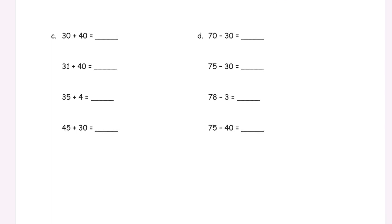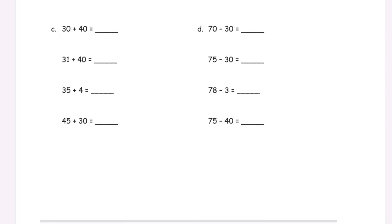And now part C. We're adding tens — 30 and 40, 70. It's three tens plus four tens is seven tens. Seven tens is 70. And 31 and 40. You might see the similarity between these two. This is 30 plus 40, this is 31 plus 40. It's the same problem almost — it's just one more. So the total is one more. And that's a mental trick that you can use.